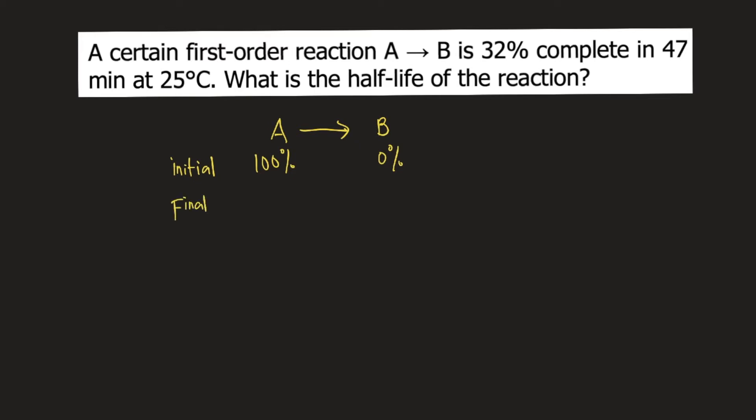For the final concentrations, the problem says it is 32% complete. For this specific reaction, when you say 32% complete, that means only 32% of A is converted to B. So for B, you have 32% and you have remaining 68% for A.